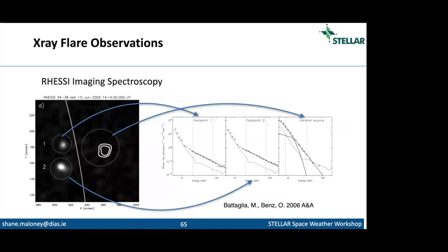With RHESSI imaging spectroscopy, you can get spectra as a function of both time and space — getting the photon spectrum and fitting it spatially. Here they fit the two foot points, which have quite similar slopes, compared to the coronal source, which has a much steeper slope. This type of imaging spectroscopy combined with radio imaging spectroscopy is really powerful for diagnosing what's happening in the acceleration region and tying down acceleration mechanisms in solar flares, especially related to magnetic reconnection.